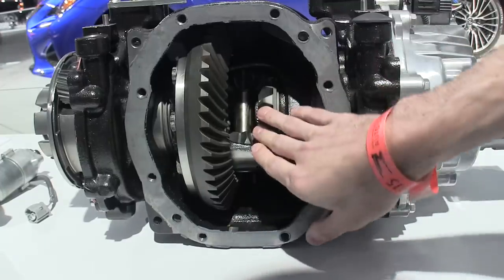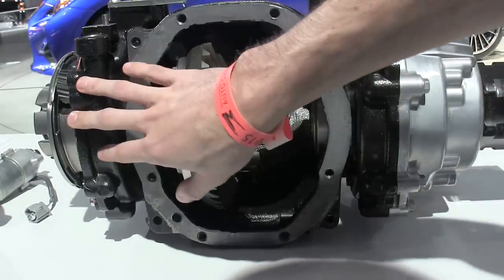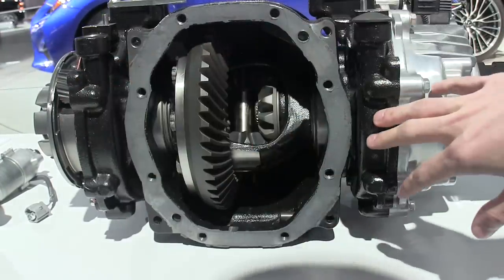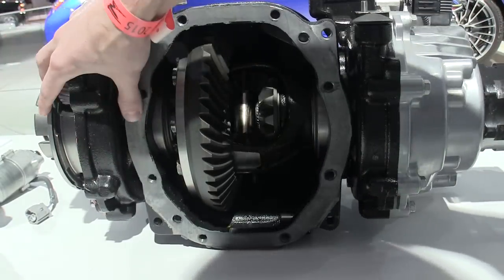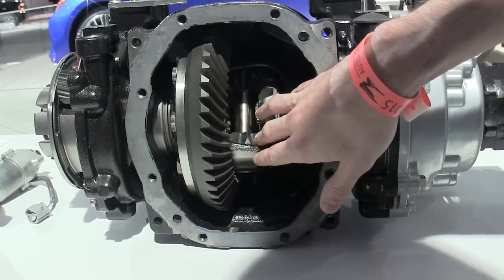So each of the axles have their own planetary gear set matched with a clutch pack and what this does is it allows the axle on either side to lock up with the differential housing and what that does is sends more torque to that wheel.